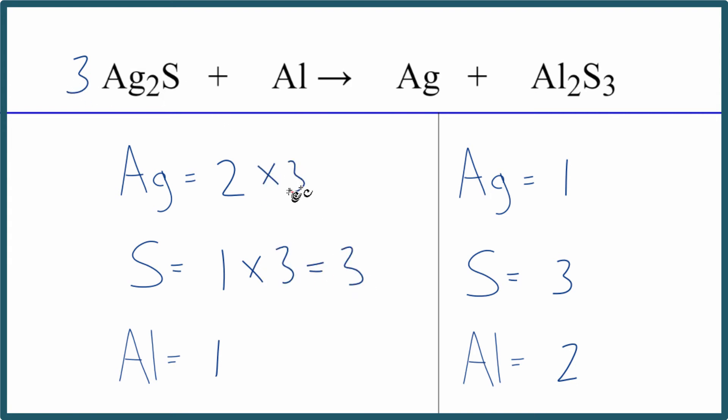Two times three, so that gives me six silvers. Now we're pretty much done though, because we said with the silver, we could just put a coefficient in front of that. Put a six here, one times six. That gives us six. It doesn't change anything.